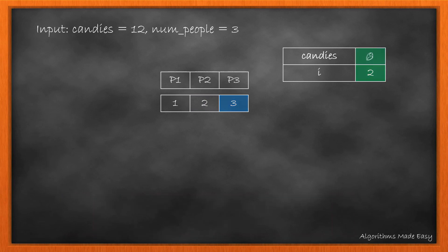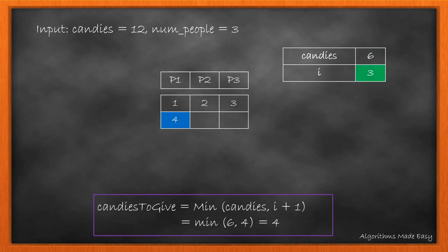We keep distributing candies in this fashion. As we come to person 2 for the second time, we need to give them 5 candies, but only 2 remain. So we give them 2 candies.